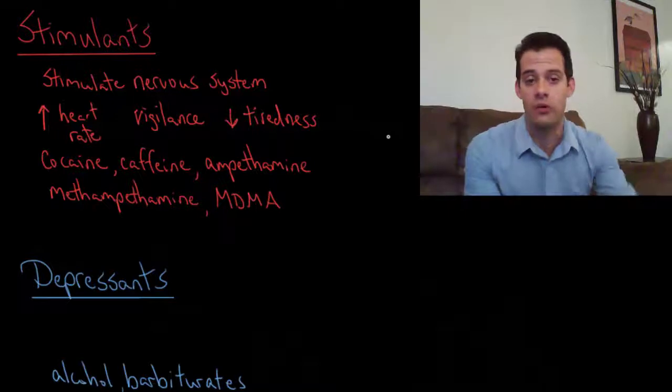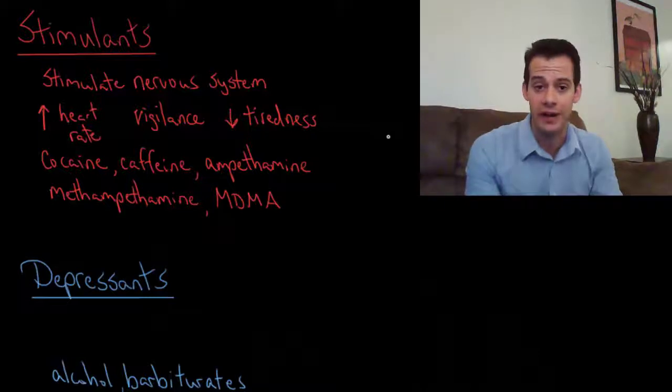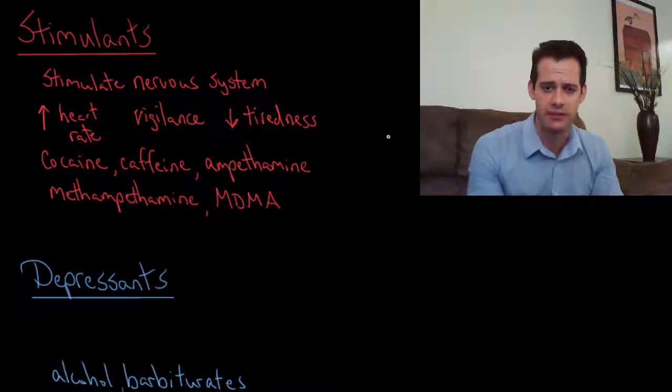Many stimulants also stimulate a region of the hypothalamus called the nucleus accumbens. This is also known as the reward area of the brain and is normally activated from behaviors like eating or sex. What these drugs do is cause a rush of activity in this nucleus accumbens, which can cause short-lived feelings of euphoria for the user and explains why these drugs can be quite addictive.